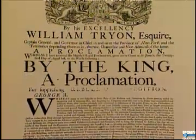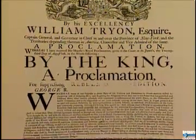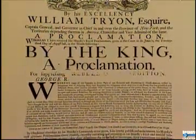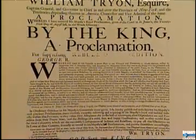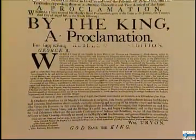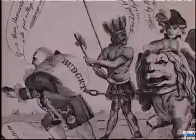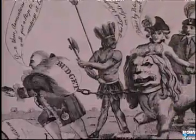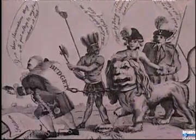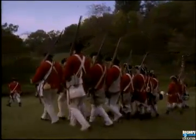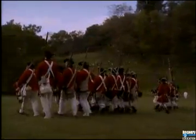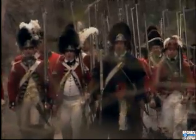First, Britain's King George III issued the Proclamation of 1763. In it, the king forbade colonists from moving west of the Appalachian Mountains. The British wanted to prevent the colonists from taking more land from Native Americans because they feared it would lead to more expensive wars. And the British decided that the colonists should help pay the cost of the soldiers they would station in America, soldiers who protected the colonists from Native American attacks.